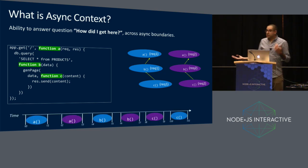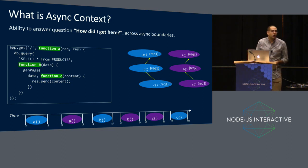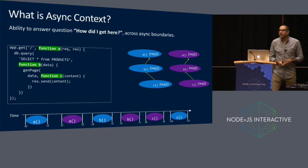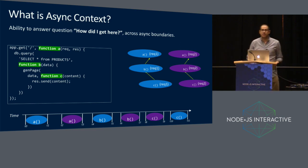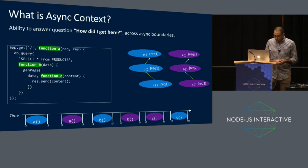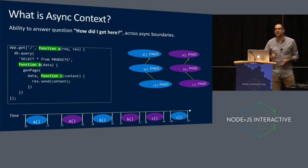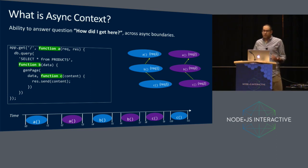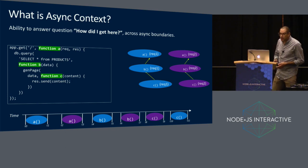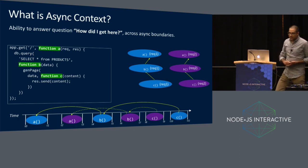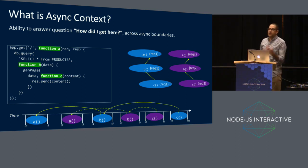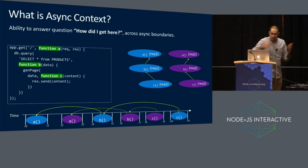If you think about how JavaScript works, there's an event loop model. Functions get executed serially. Perhaps request 1 and request 2 came in and were executed at the same time — they were interleaved. Maybe request 1 started first but finished last. Fundamentally, what we need to do to solve this problem is we need some pointers that point back across this execution chain. The solid line is for request 1, the dotted line is for request 2. That's what we're going to talk about.